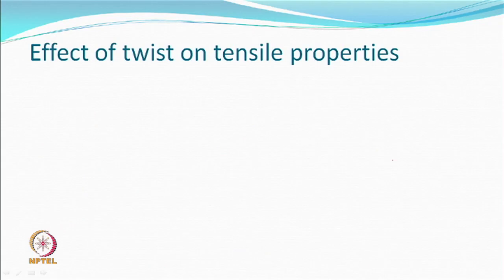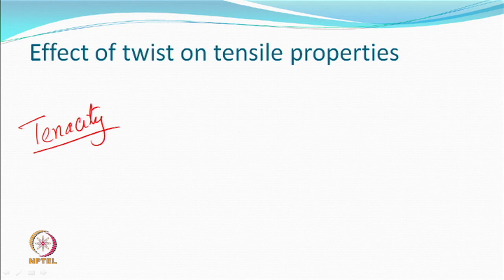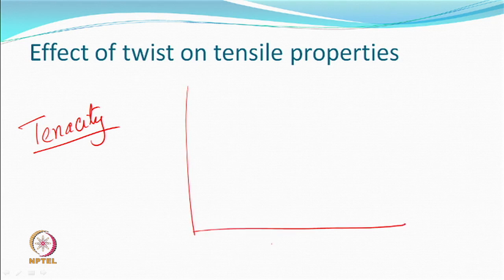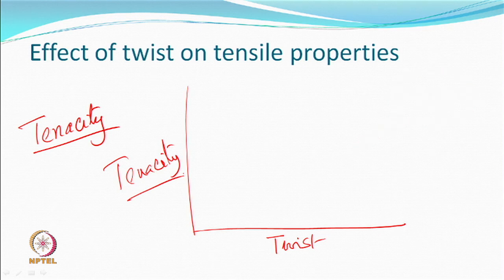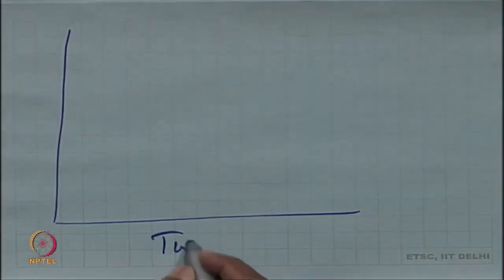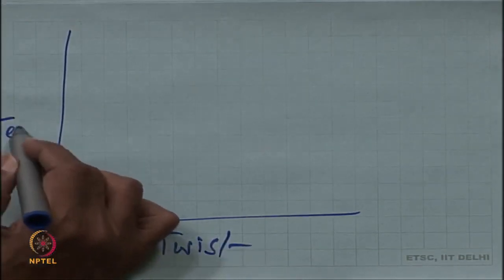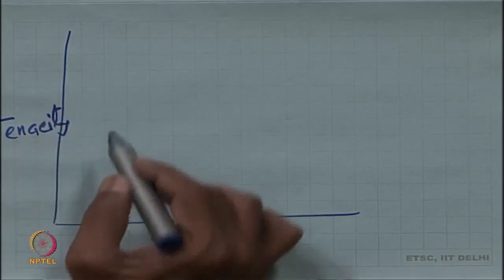What should be the effect of twist on tensile properties? Let us look first at tenacity. What do we expect would happen to tenacity? Will tenacity increase? First increase then decrease — meaning whatever we are expecting in the case of crimp rigidity, the same kind of curve is expected for tenacity.